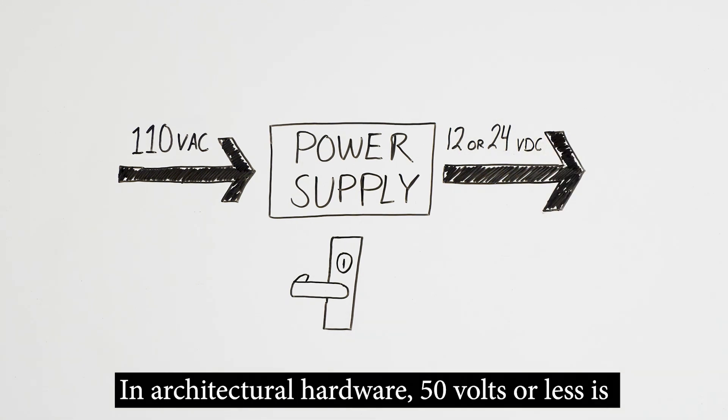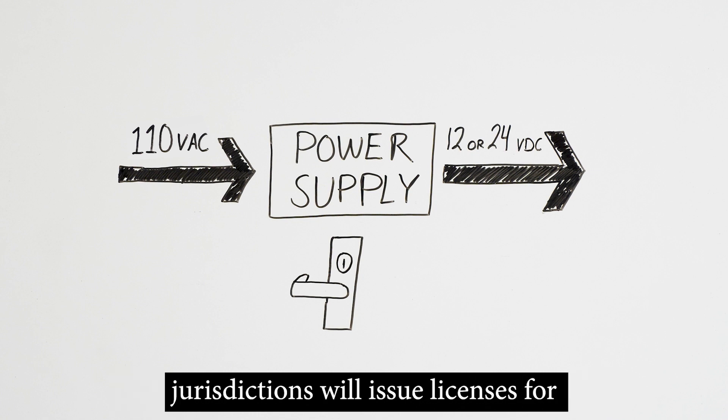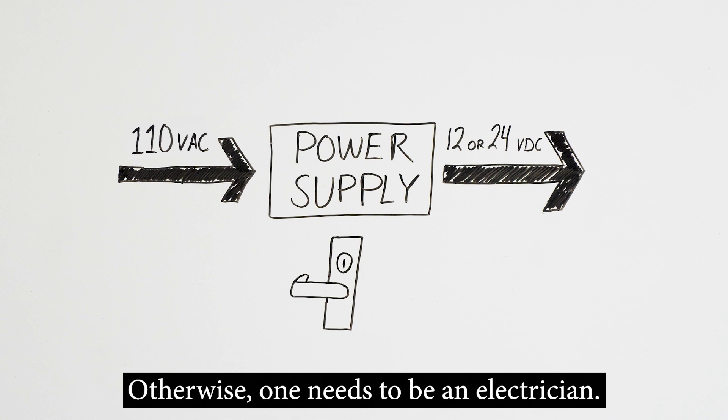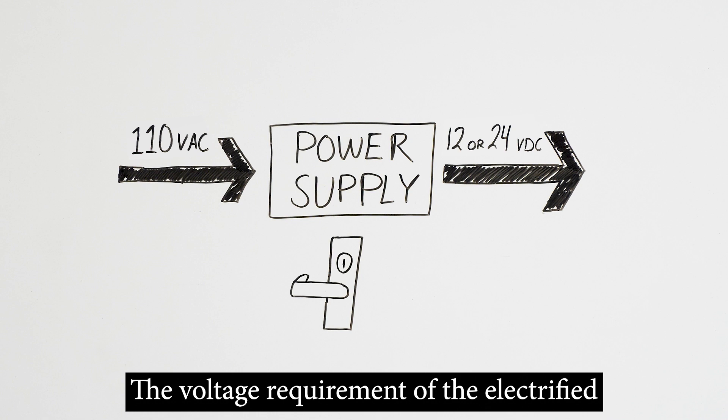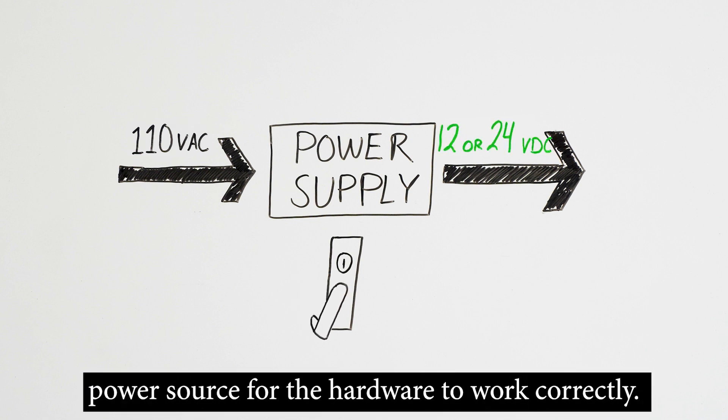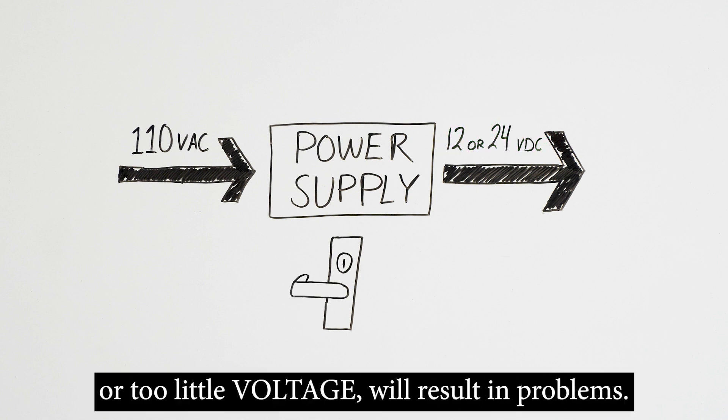In architectural hardware, 50 volts or less is considered low voltage, and some states and jurisdictions will issue licenses for individuals to work on 50 volts or less. Otherwise, one needs to be an electrician. The voltage requirement of the electrified hardware must match the output voltage of the power source for the hardware to work correctly. Too much or too little energy, that is too much or too little voltage, will result in problems.